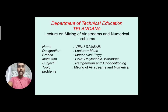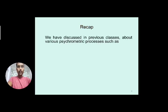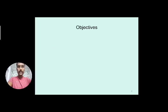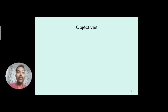We will see what happens when different air streams are mixed — which air stream has to be passed to the air conditioner and what changes are taking place. In the last class, we focused on psychrometric processes covering topics like humidification, dehumidification, cooling and humidification, and heating and humidification.